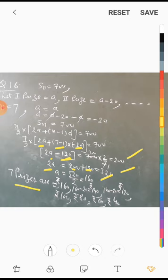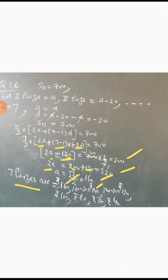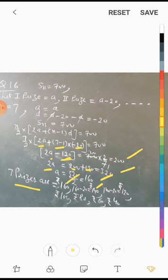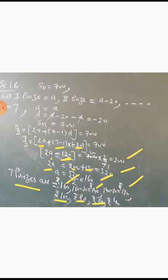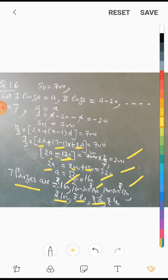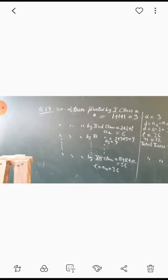So the seven prizes are: 1st prize Rs. 160, 2nd prize Rs. 140, 3rd prize Rs. 120, 4th prize Rs. 100, 5th prize Rs. 80, 6th prize Rs. 60, and 7th prize Rs. 40 — each reducing by Rs. 20.